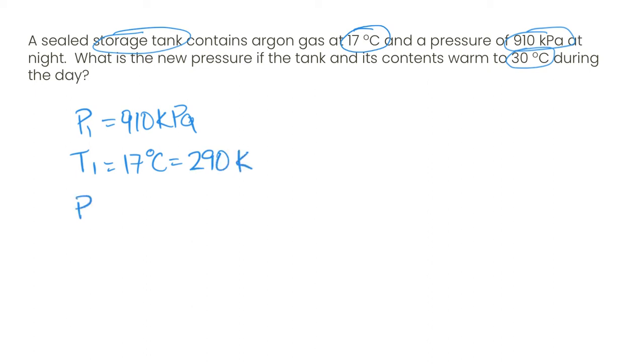Our P2 we don't know, and we know our T2 is 30 degrees Celsius, or adding 273 to that gives us 303 K. Okay, we do need our temperatures in Kelvin. So make sure you do that conversion first.